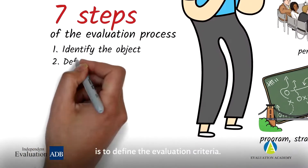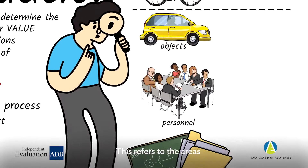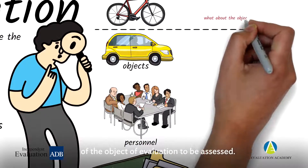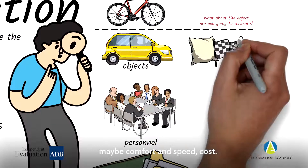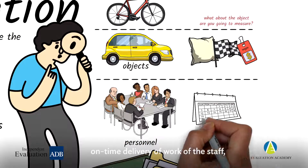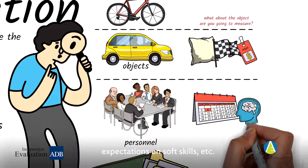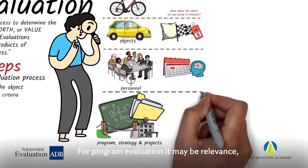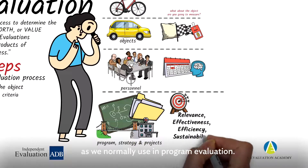The second step is to define the evaluation criteria. This refers to the areas of the object of evaluation to be assessed. For instance, if it's a vehicle, maybe comfort, speed, and cost. For personnel, it may be timely delivery of work, expectations on soft skills, etc. For program evaluation, it may be relevance, effectiveness, efficiency, and sustainability, as we normally use in program evaluation.